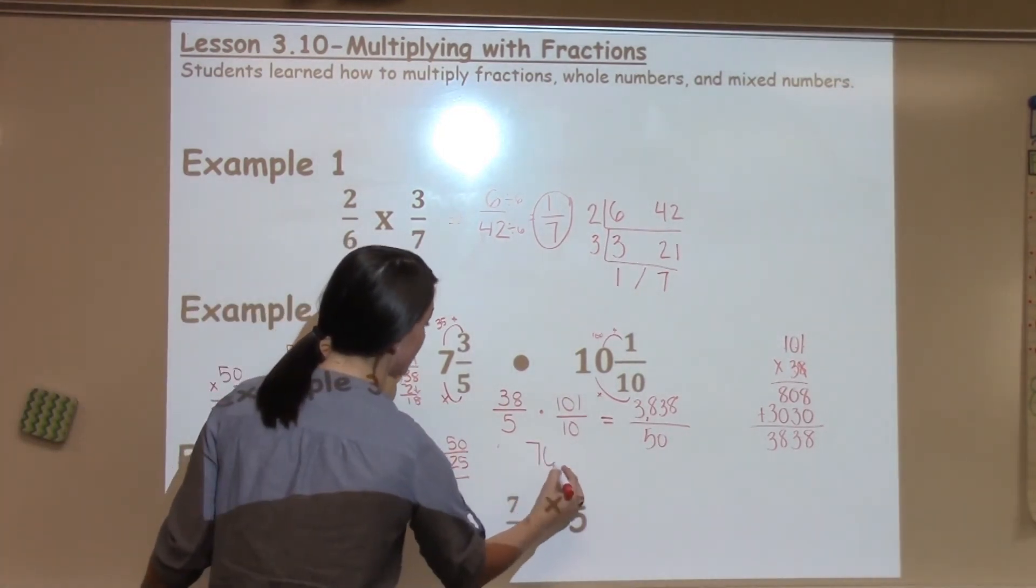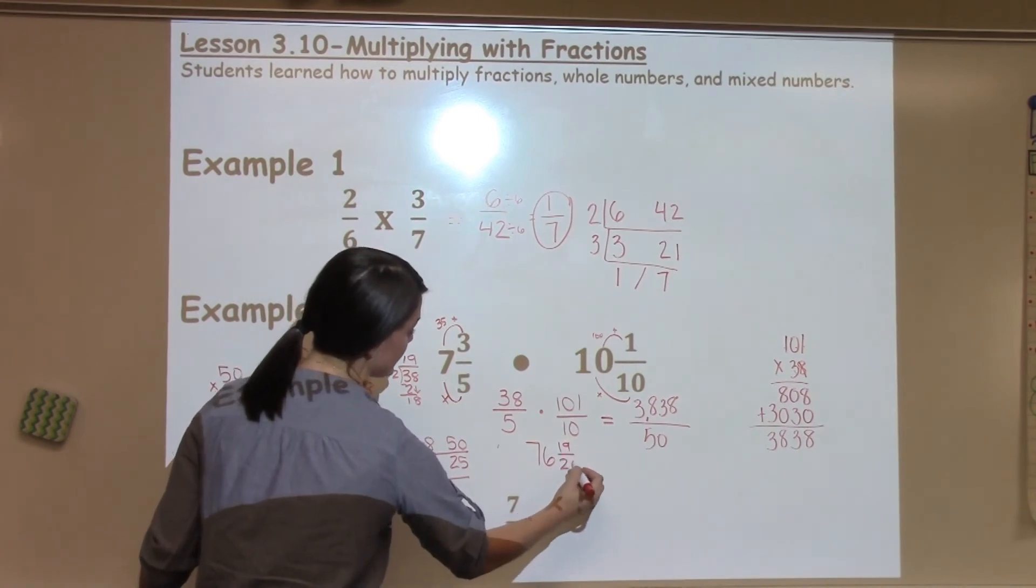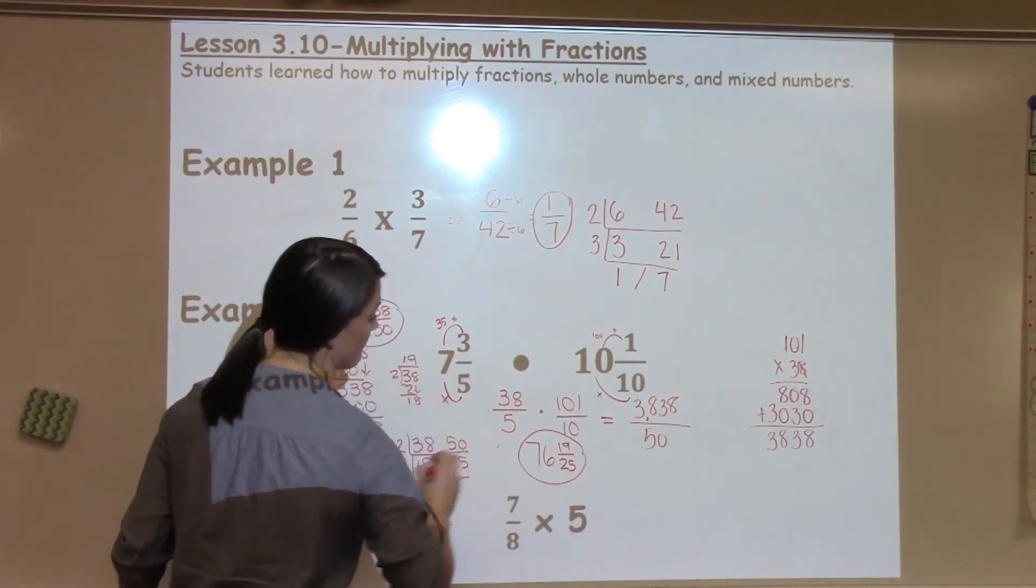There's nothing that I can pull out of a 19 and a 25 evenly. So I know my final, final answer, as low as it can go, is 76 and 19/25.